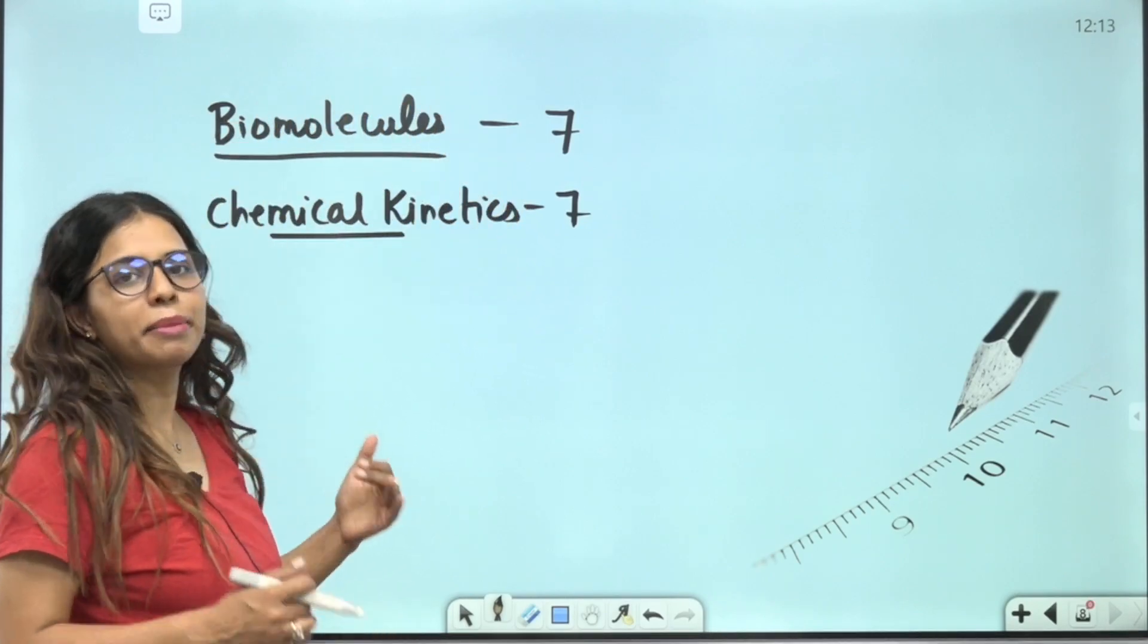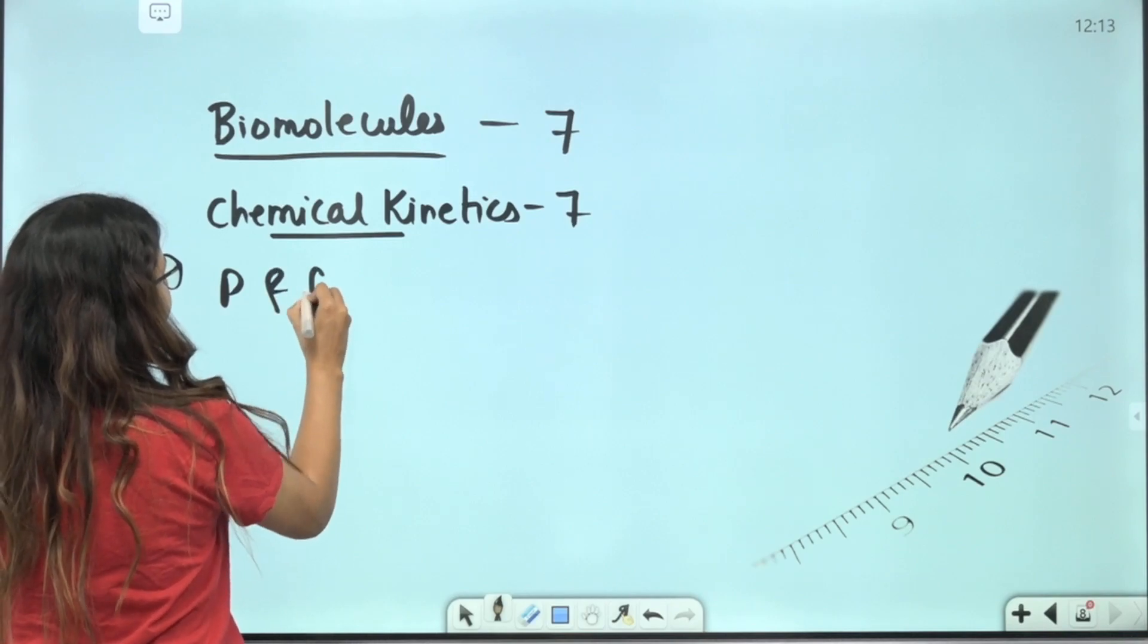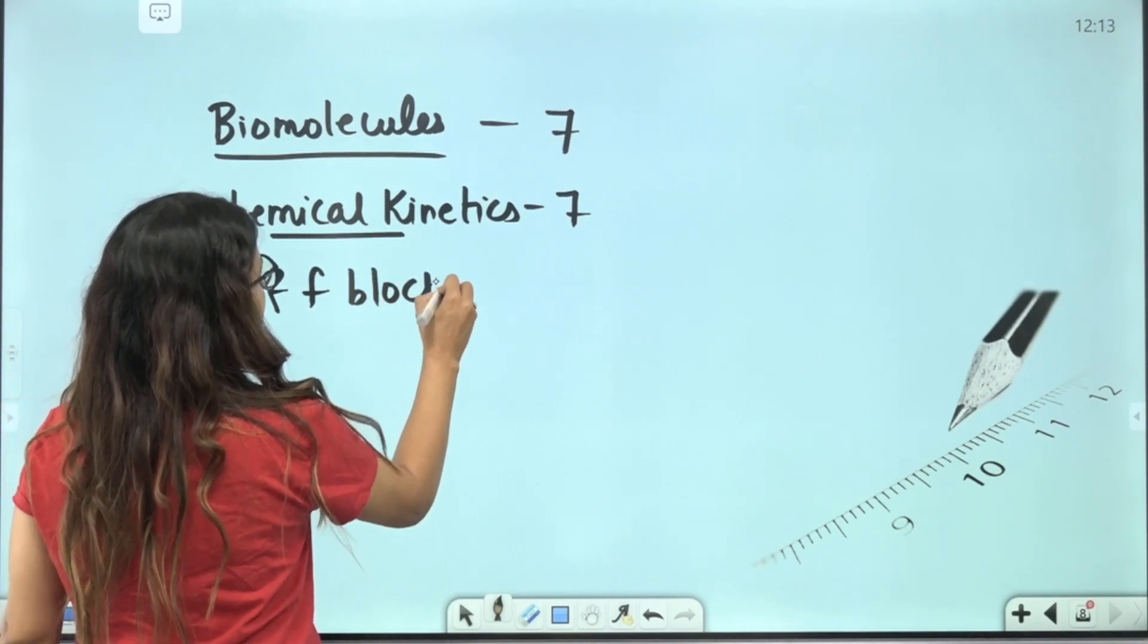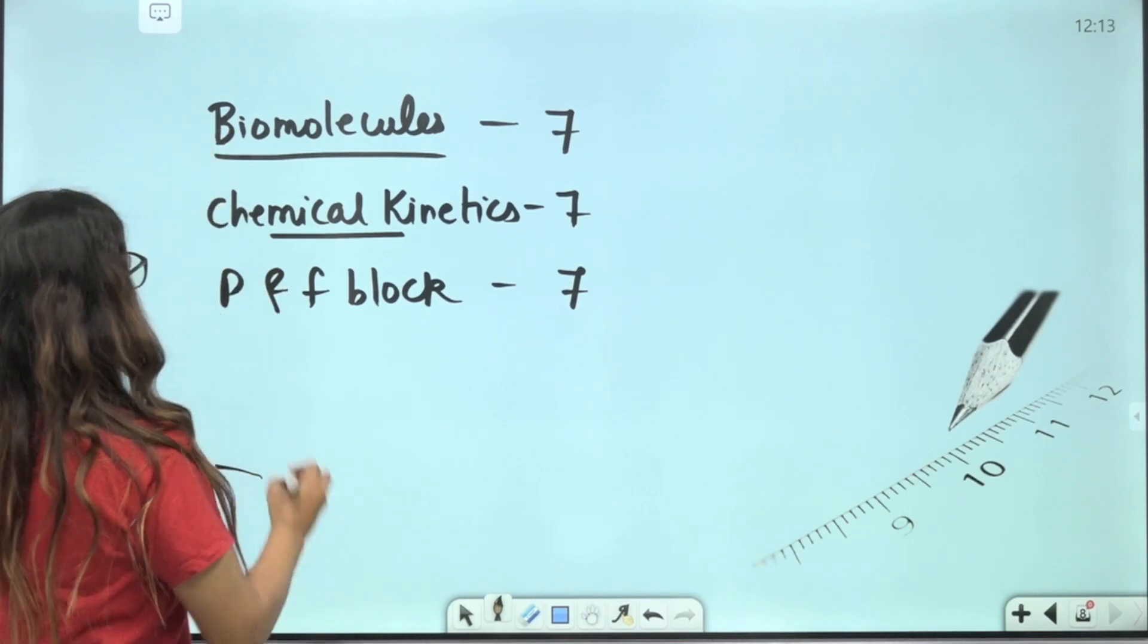And that's why chemical kinetics is a small chapter. You can raise 7 marks here. After that, so biomolecules, chemical kinetics is a very small chapter.